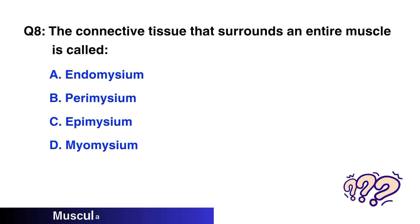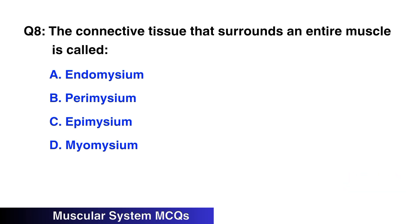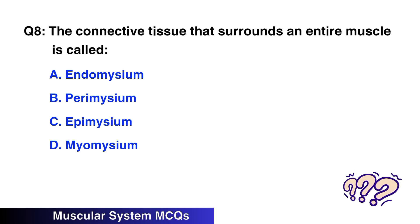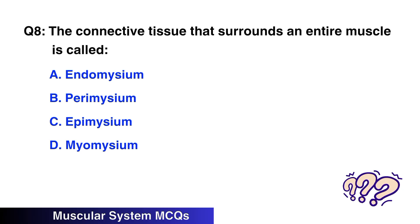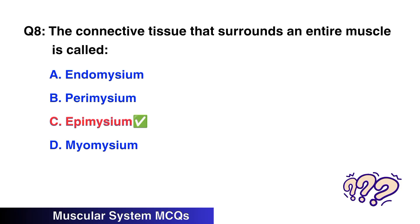Question No. 8: The connective tissue that surrounds an entire muscle is called — the right option is C: Epimysium.